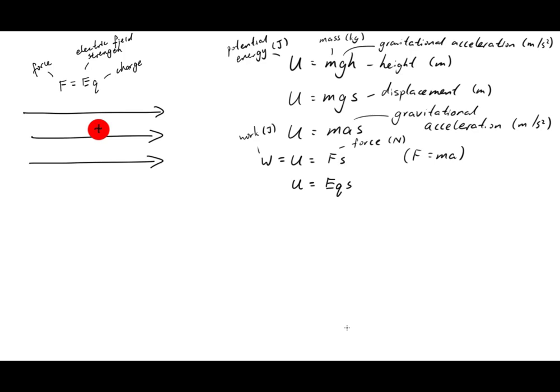Volts are a measure of electric potential energy. In fact, the change in volts, denoted delta v, is equal to es. So now, we have u equals delta vq.